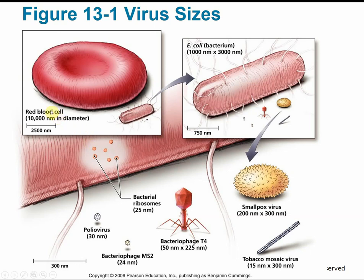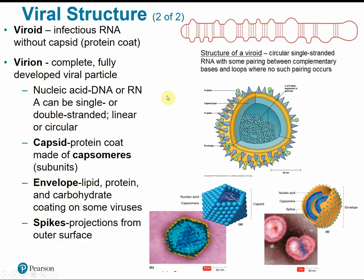This shows the comparative sizes of a human red blood cell next to an E. coli bacterial cell, and then some viruses compared to the size of an E. coli cell. Looking at viral structure: a viroid is just an infectious RNA without a capsid protein coat — essentially naked genetic material. A virion is a complete, fully developed viral particle composed of its nucleic acid surrounded by a protein coat.